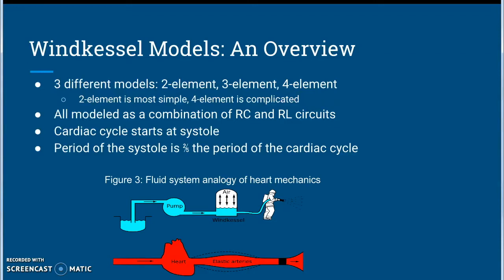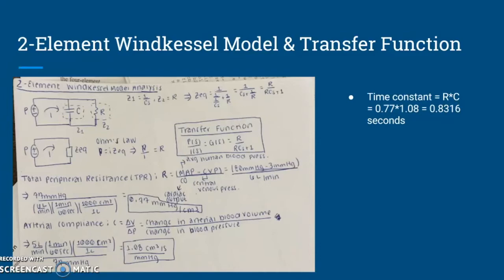The two-element model is the most simplified model used. It consists of a resistor in parallel with a capacitor. The input is the blood flow modeled as current, while the output is the blood pressure modeled as voltage. Combining the resistor and capacitor simplifies the circuit, which allows Ohm's law to be used in order to find the transfer function. The value for R was calculated by subtracting the average human blood pressure and central venous pressure, then dividing by the cardiac output. The value for C was calculated by dividing the change in arterial blood volume by the change in blood pressure. The transfer function represents a first-order system, so the time constant can be calculated and is found to be 0.8316 seconds.